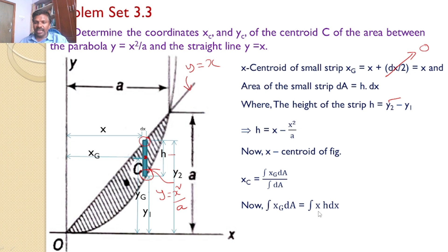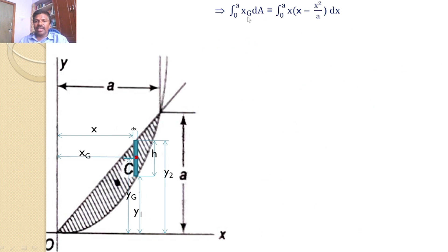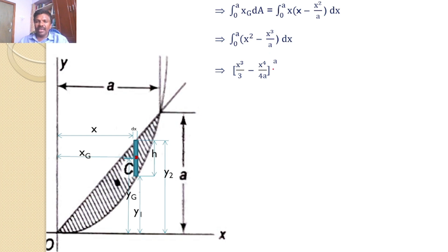The integral ∫xg·da = ∫x·h·dx. Substituting h = x − x²/a gives ∫xg·da = ∫x(x − x²/a)dx. The limits for x vary from 0 to a. So ∫₀ᵃ xg·da = ∫₀ᵃ x(x − x²/a)dx. Expanding: x·x = x² and x·(x²/a) = x³/a. Integrating: x² → x³/3 and x³/a → x⁴/(4a), with limits 0 to a. Substituting: a³/3 − a⁴/(4a) − 0.